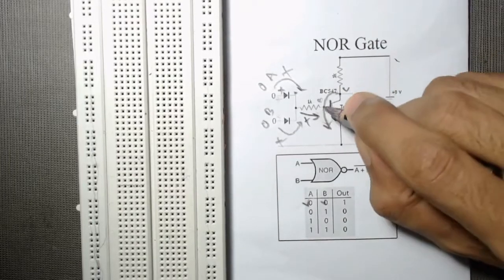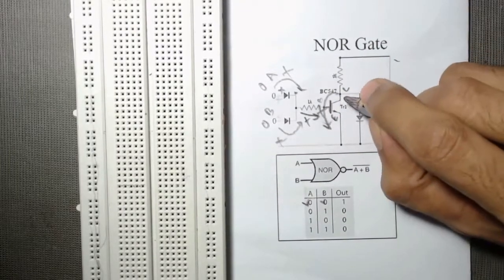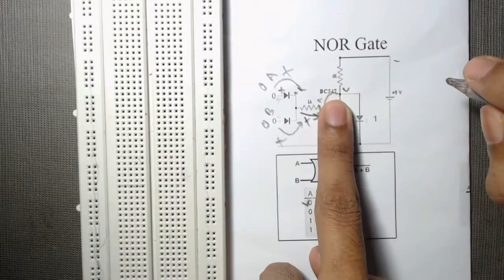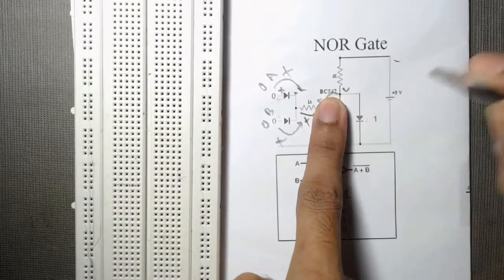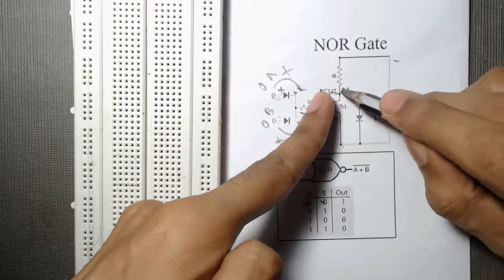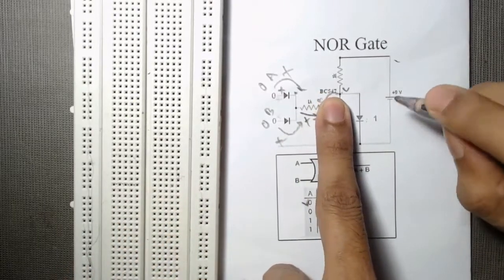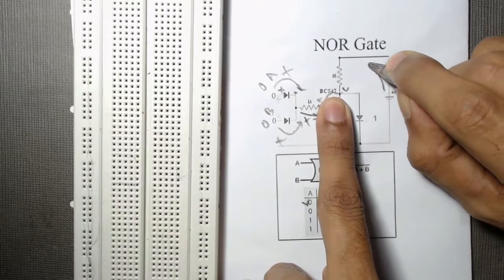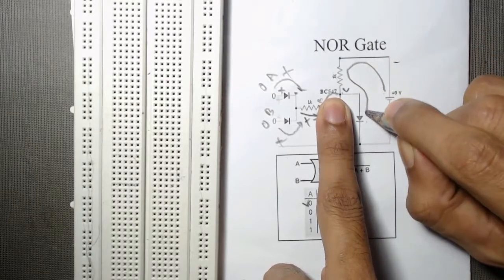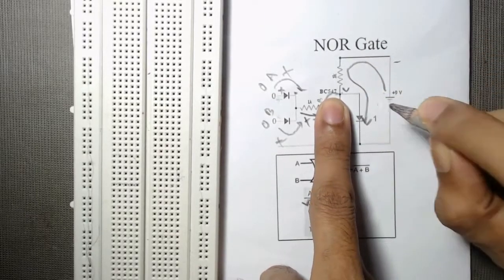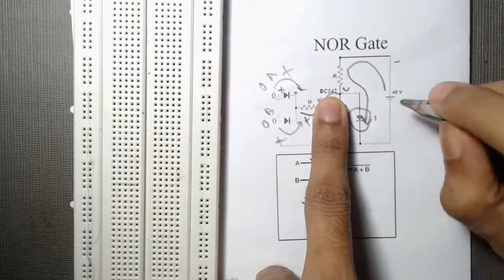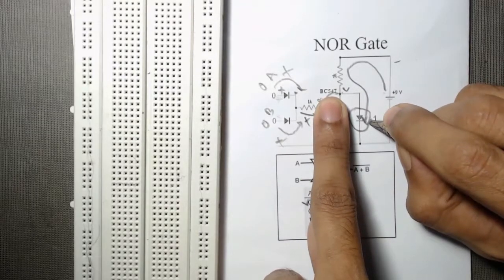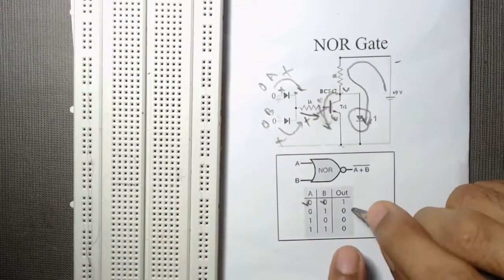Since there is no base voltage, the transistor will act as an open switch — there is no connection from collector to emitter. In this case, the entire current will flow through the output LED, so the LED will be in the ON state and we will get output that is 1.